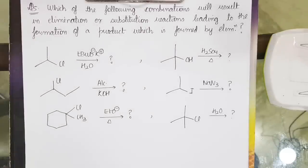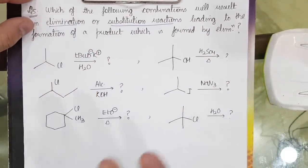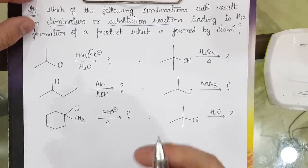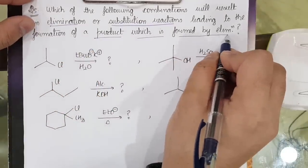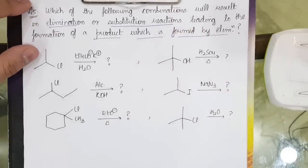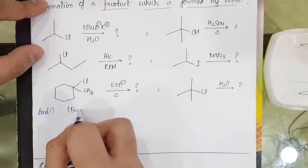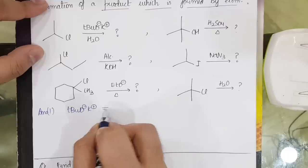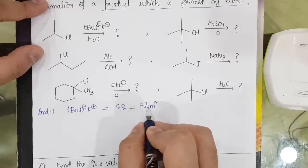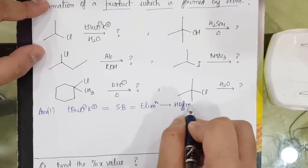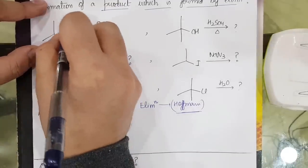The next question: which of the following combinations will result in elimination or substitution? In case one, tertiary butyl hydroxide (t-BuOH/t-BuO minus) is given — it is very bulky and a strong base, so elimination occurs. This is also known as Hofmann elimination. So case one gives elimination.